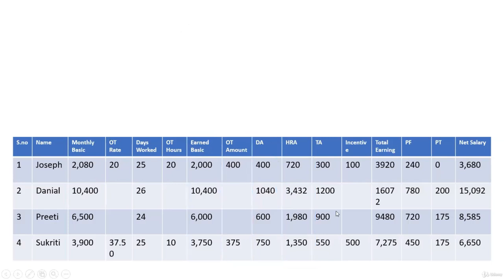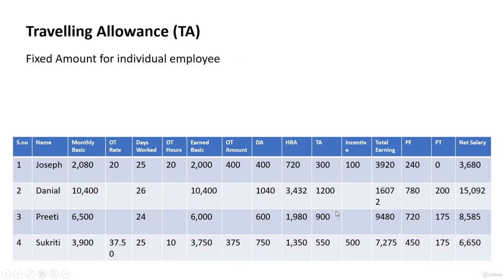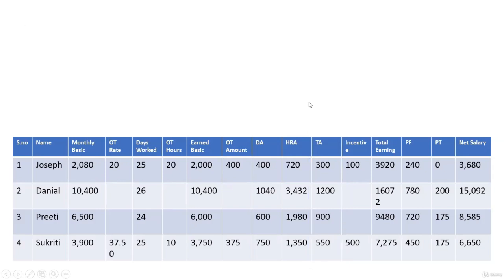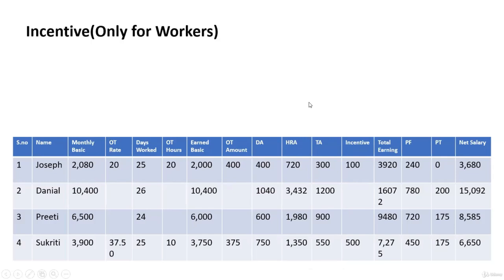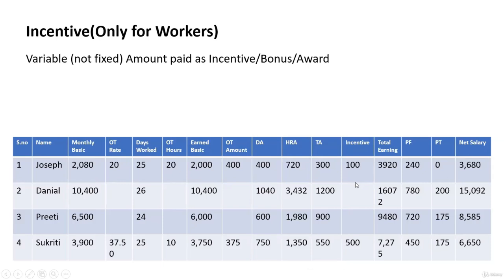Traveling allowance is calculated on a fixed amount basis — a company can give a fixed traveling allowance amount or set a fixed percentage, similar to DA and HRA. This gets added to the basic salary. There are also incentives available for workers, which are variable and totally dependent on the employer's choice to provide them as a bonus or not.